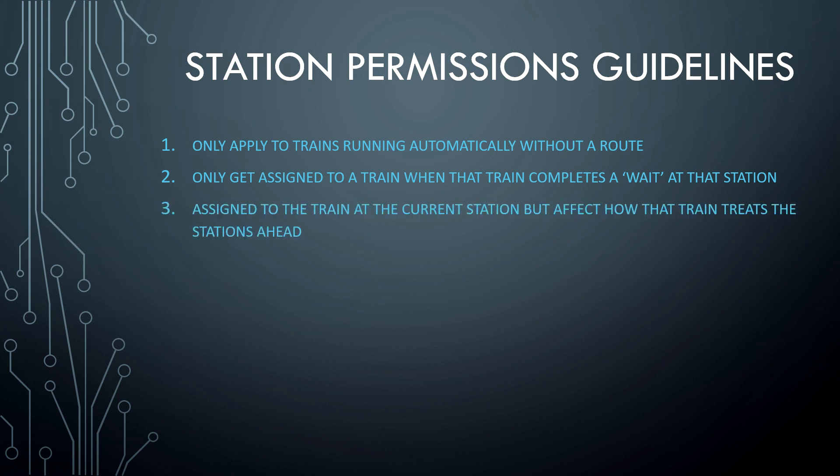Number 3: Station permissions are assigned to the train at the current station but affect how that train treats the stations listed ahead.